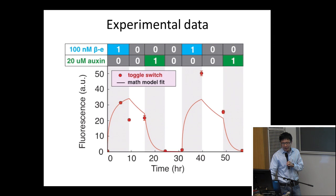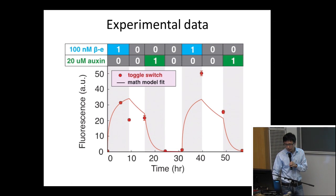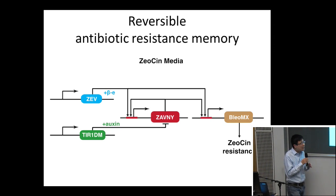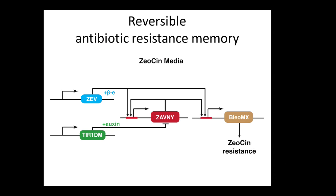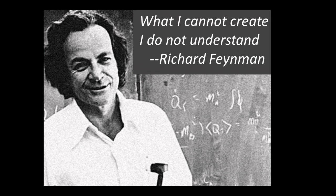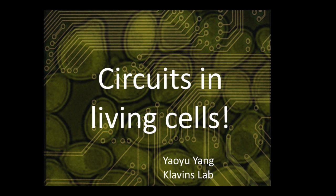You can see it turns on, stays on, turns off by auxin, and stays off — and this can do multiple cycles. We then moved on to the next step, using this switch as a modular circuit to build a reversible antibiotic resistance memory — basically turning on an antibiotic resistance gene that can work as a reversible memory. I'll close my talk with a code that inspires everyone in this field, and I'm happy to take any questions.